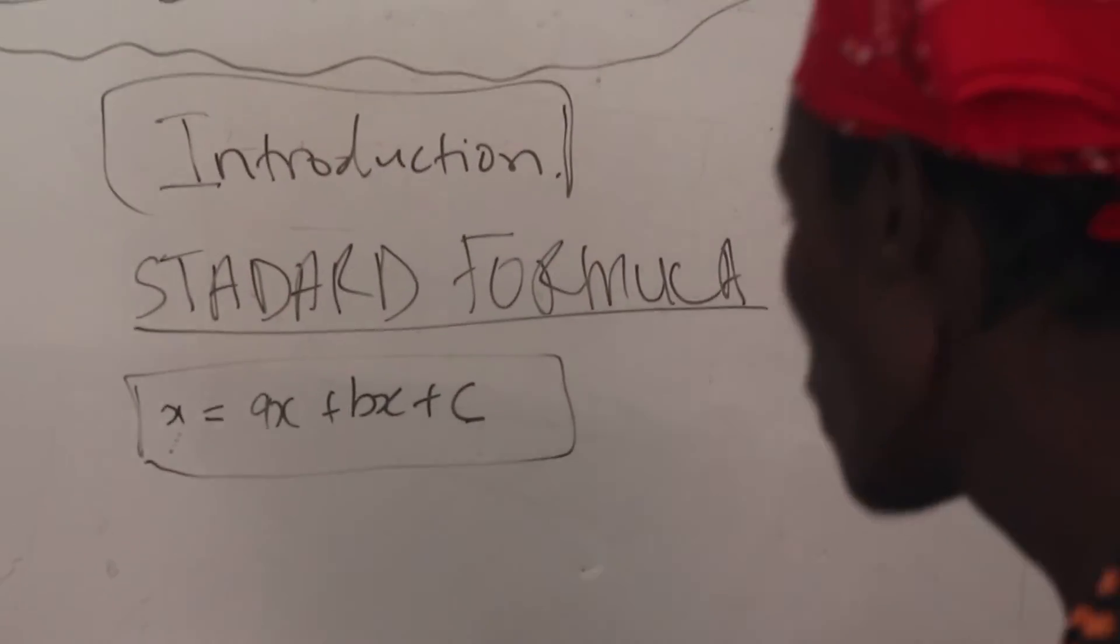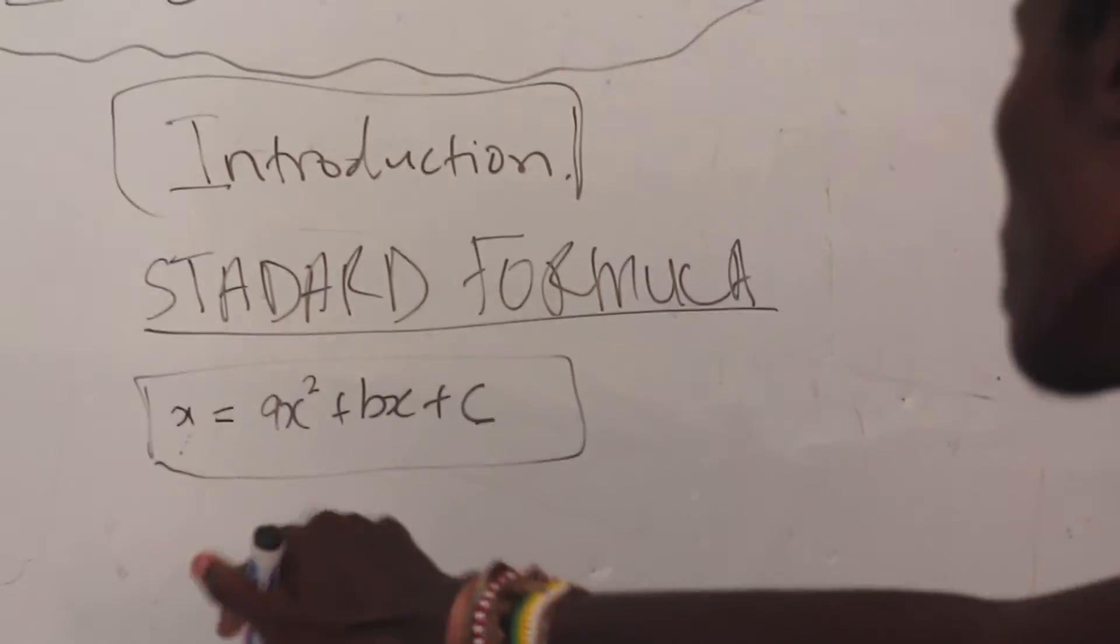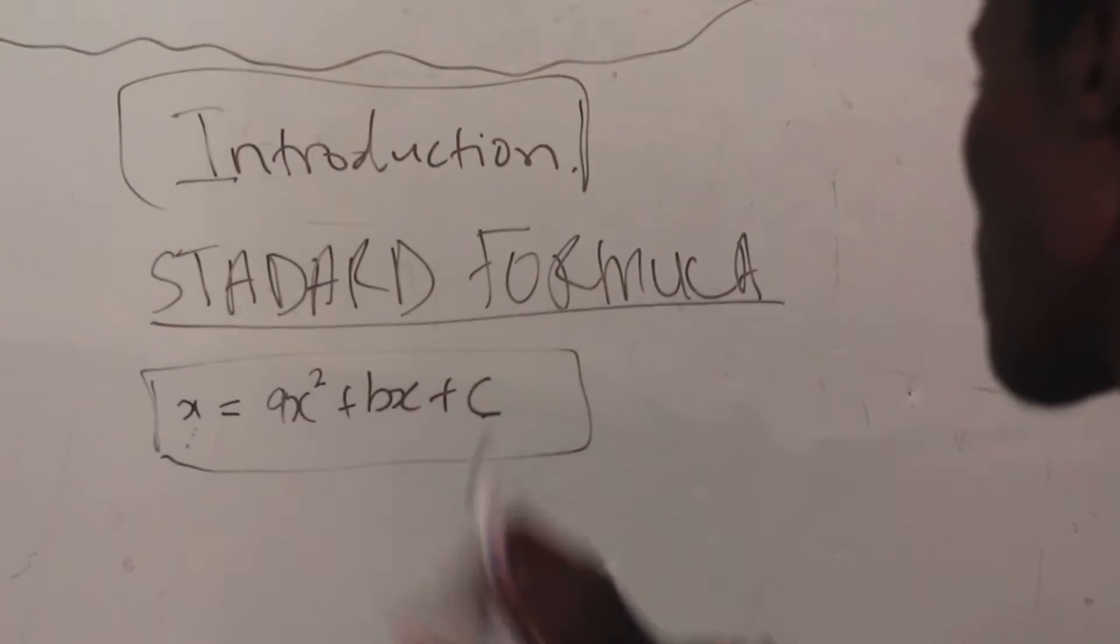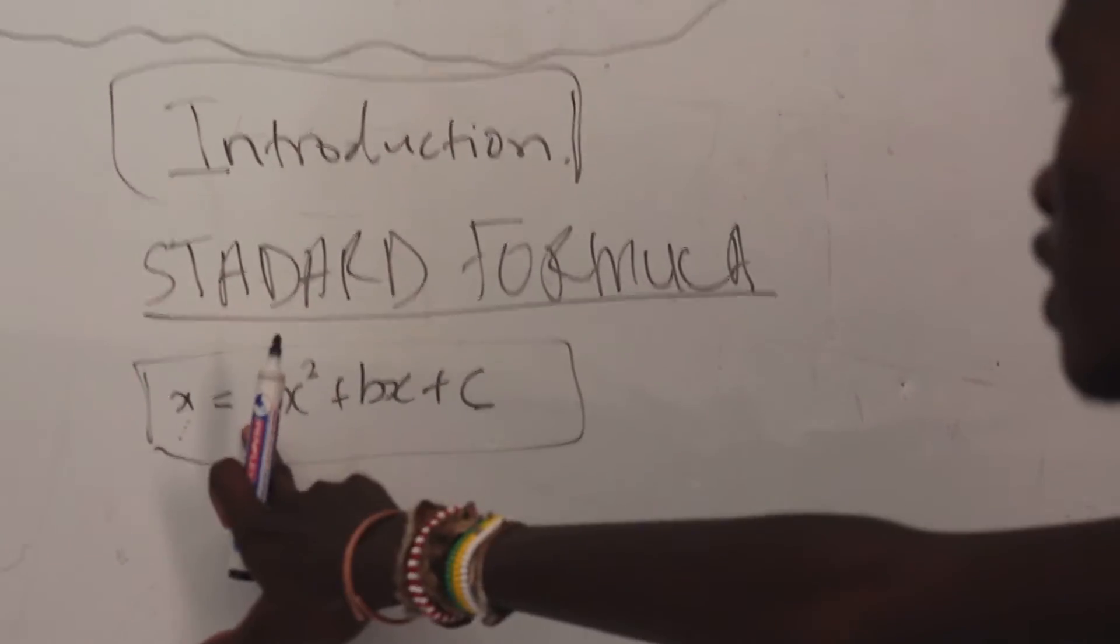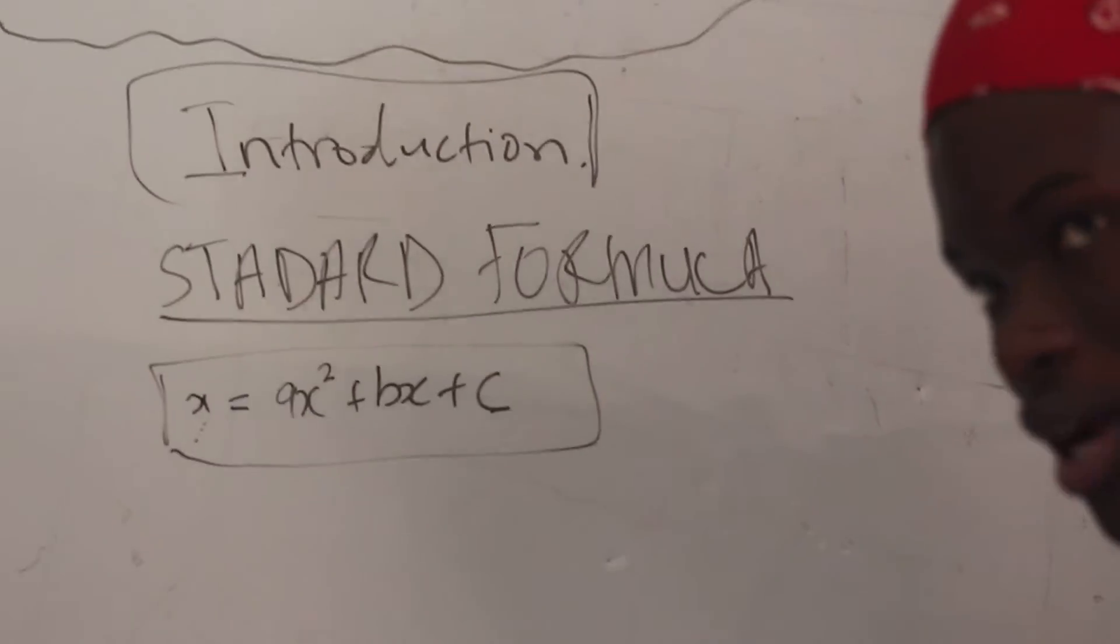I'm sorry, it's ax squared. So we have ax² + bx + c. The a represents a number, b represents a number, c represents a number, and x is a variable.